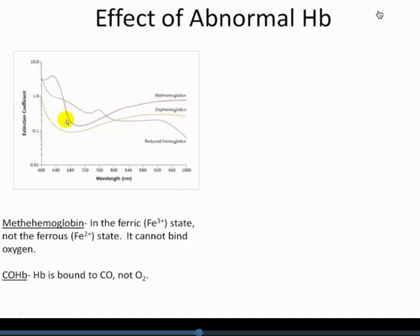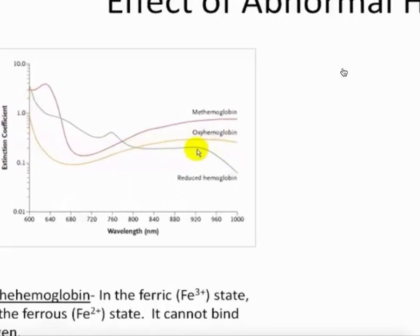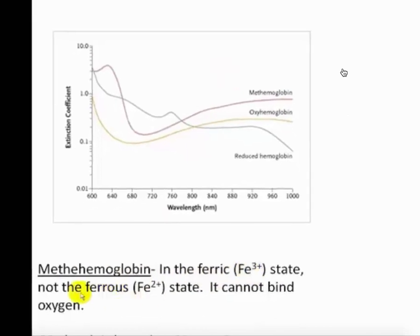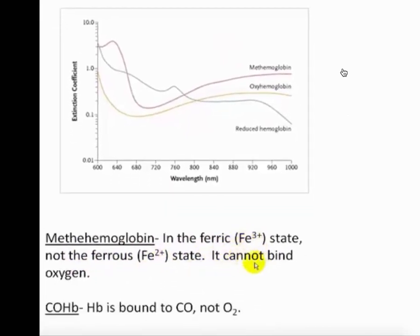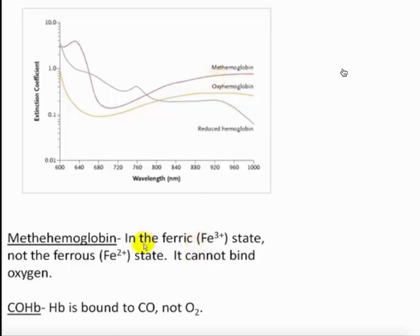The machine can differentiate reduced hemoglobin versus oxyhemoglobin using extinction coefficients, but methemoglobin gives signals very similar to those. Methemoglobin has iron in the ferric, plus-three state rather than the ferrous plus-two state, and in the plus-three state it cannot bind oxygen. The machine detects the hemoglobin and the iron but cannot distinguish plus-two from plus-three. It interprets Fe3+ as Fe2+ with oxygen bound — giving a false reading indicating good hemoglobin saturation when, in fact, the iron is ferric and carrying no oxygen.